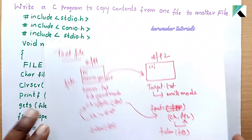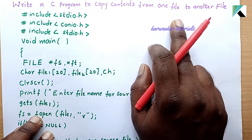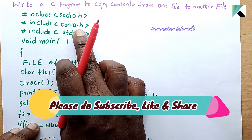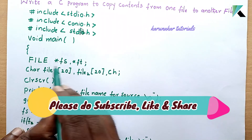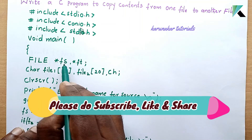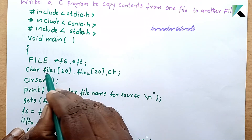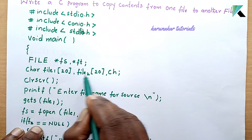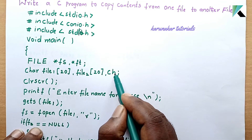Now, if you write the program: the first header files are stdio.h, conio.h, and stdlib.h. Next, void main. We create file pointers Fs and Ft — Fs for the source file and Ft for the target file. A character variable ch will also be declared.